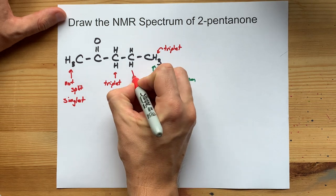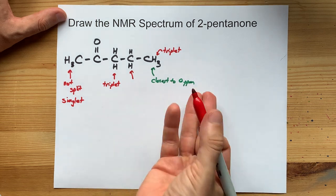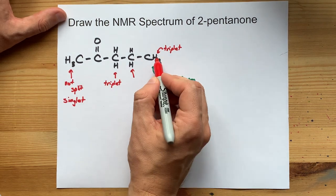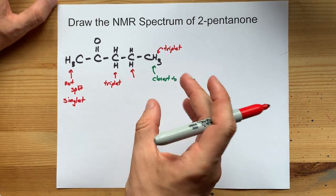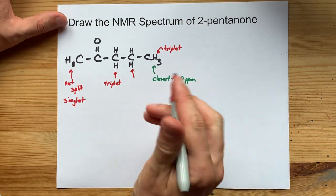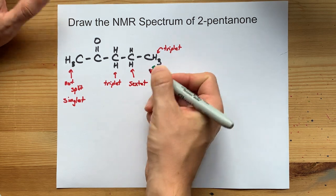Now, these two hydrogens are adjacent to two hydrogens on their left, at least the way I've drawn it, and three hydrogens on the right. That's five total. And when it gets split five times, you end up with six smaller peaks, which are called a sextet.